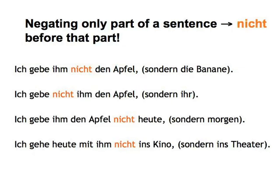Now, if you want to negate a particular element of the sentence, you simply put the nicht in front of what you want to negate. Very often you continue with sondern, giving the alternative as well, if it's not already known. Remember that sondern is used after a negative statement instead of aber — both meaning 'but' in English — in order to express a mutually exclusive alternative. Ich gebe ihm nicht den Apfel, sondern die Banane. Ich gebe nicht ihm den Apfel, sondern ihr. Ich gebe ihm den Apfel nicht heute, sondern morgen. Ich gehe heute mit ihm nicht ins Kino, sondern ins Theater. As you can hear, intonation further helps to indicate that you only negate one element of the sentence.